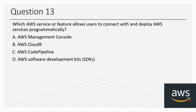Question 13: Which AWS service or feature allows users to connect with and deploy AWS services programmatically? The options are: A) AWS Management Console, B) AWS Cloud9, C) AWS CodePipeline, and D) AWS Software Development Kits (SDKs). The correct answer is D, AWS SDKs.